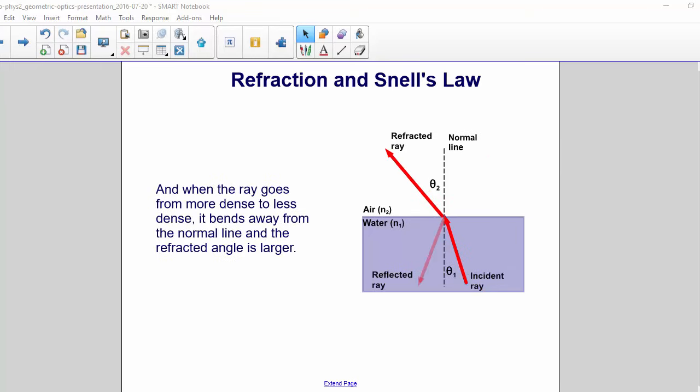And when the ray goes from more dense to less dense, it bends away from the normal line, and the refracted angle is larger.